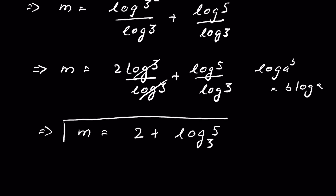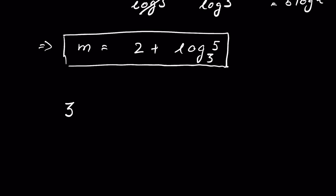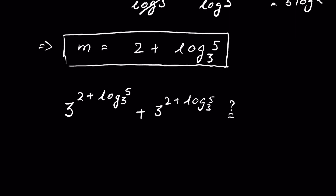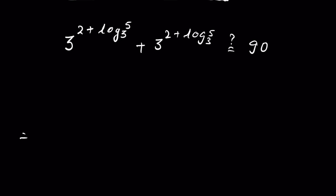So this is our answer. Now let's verify this answer. 3 to the power 2 plus log 5 base 3, plus 3 to the power 2 plus log 5 base 3, should be equal to 90. This is in the form of a raised to the power m plus n, which equals a to the power m times a to the power n.